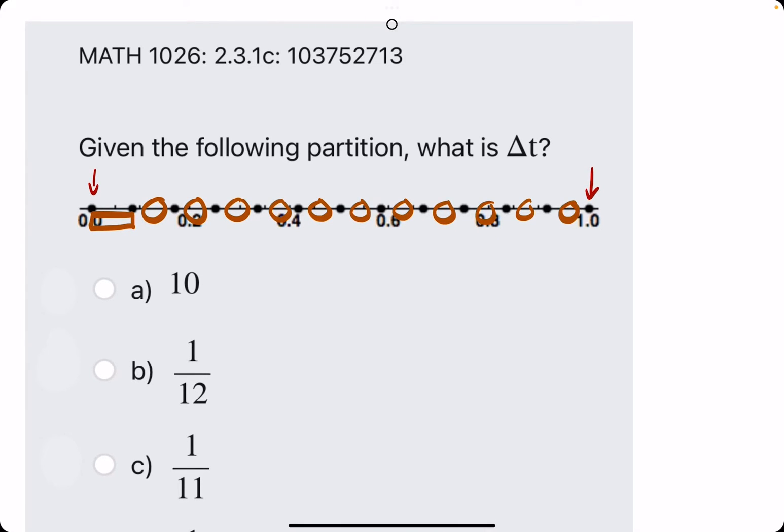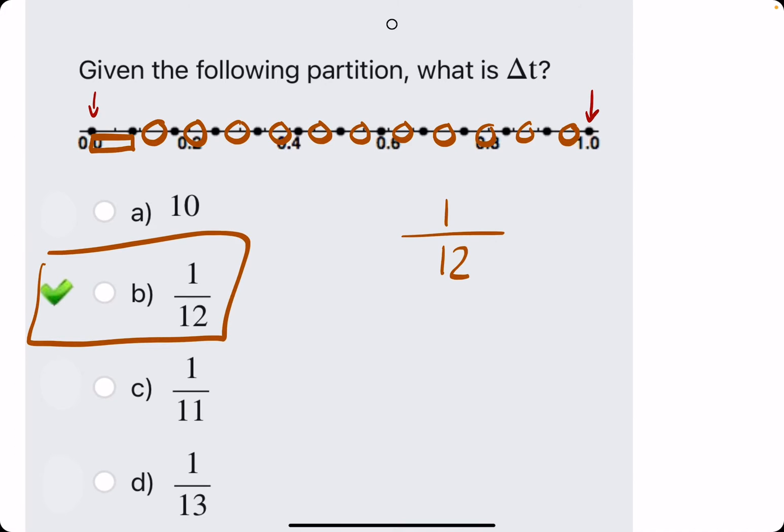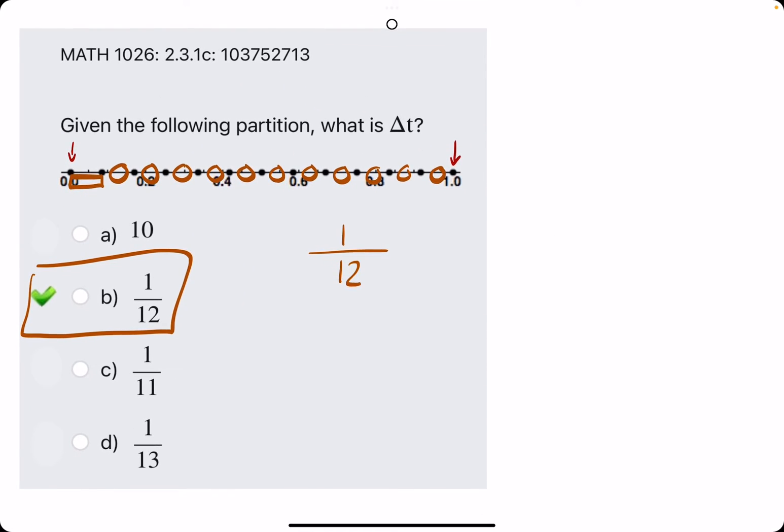So between zero and one we have divided the interval into twelve. So that means each partition is one twelfth in width.